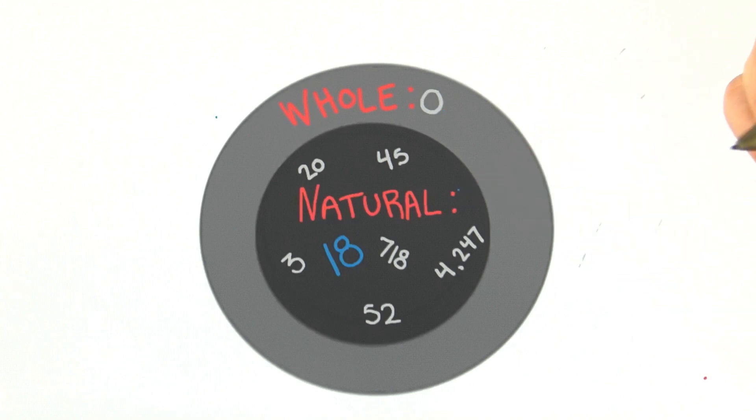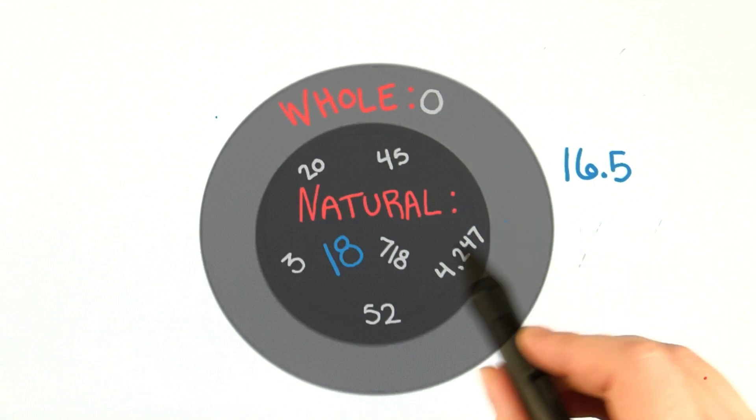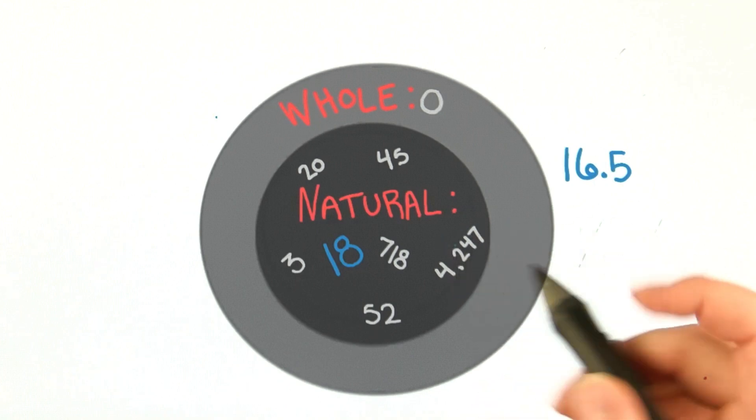And if I pick a number like 16.5, well, that is not in either of these categories, so we would need to point outside of both of these circles.